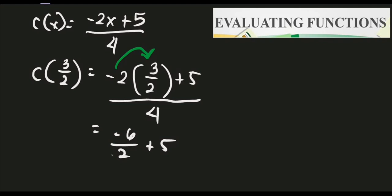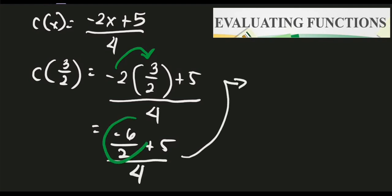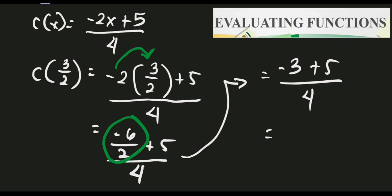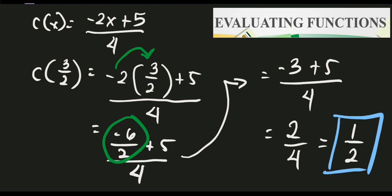All over 4. Simplify: negative 6 over 2 equals negative 3. Copy the remaining item: plus 5, all over 4. Negative 3 plus 5 equals positive 2, and 2 over 4 equals one half, or 0.5. You can express your answer in decimal form if you prefer. The answer is one half.